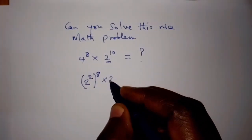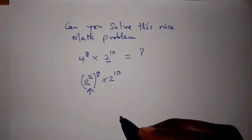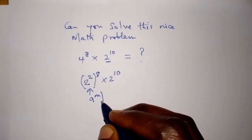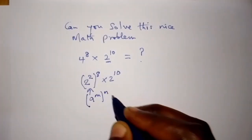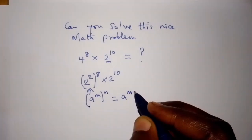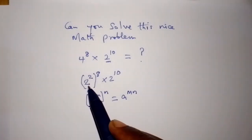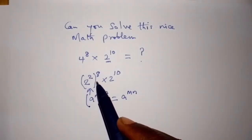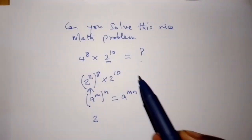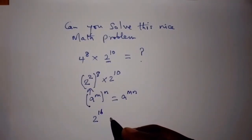Here we have used the law of indices that states that a power m, into bracket power n, is equal to a power m times n. So we apply this law: (2²)⁸ can be written as 2 to the power of 2 times 8, which is 2 to the power of 16.